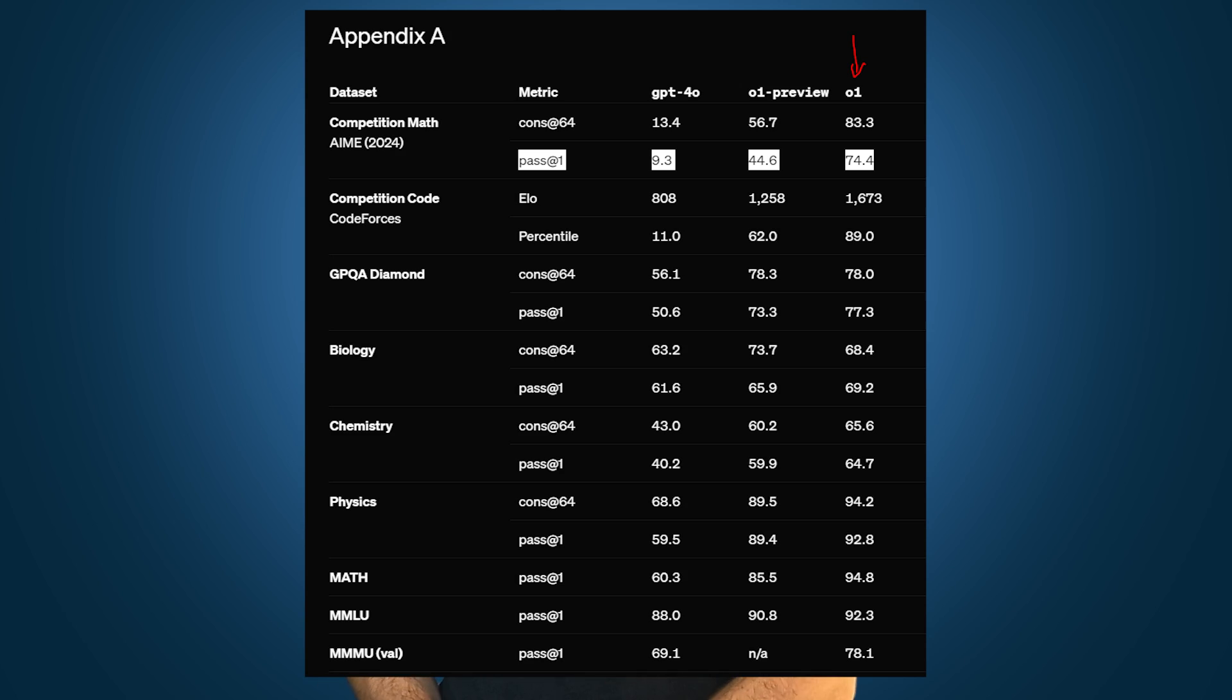On average, O1 scored much higher on benchmarks like the American Invitational Mathematics Examination, where it solved 74% of the problems compared to GPT-4O's 9%.